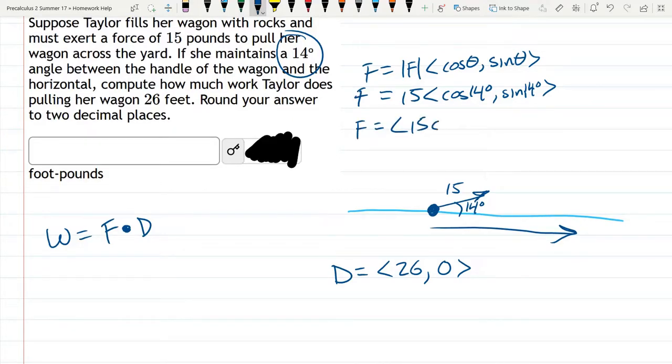and we can distribute the 15. So it's 15 cos 14 degrees, 15 sine 14 degrees.